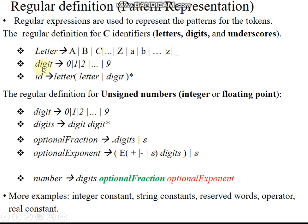The digit production always covers 0 to 9. An identifier in C language is called a variable. A variable will have either a single letter, or that single letter concatenated with any number of letters or digits — from zero to infinity as per C rules.